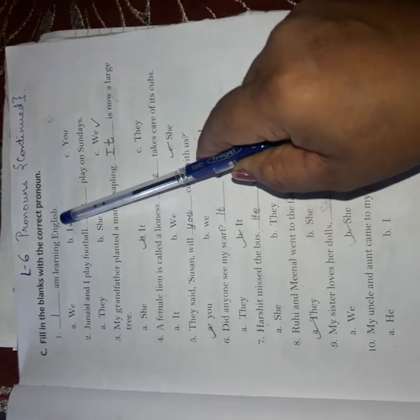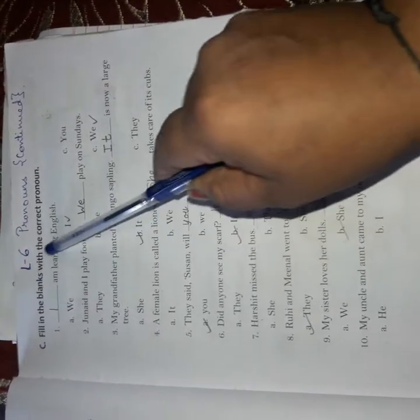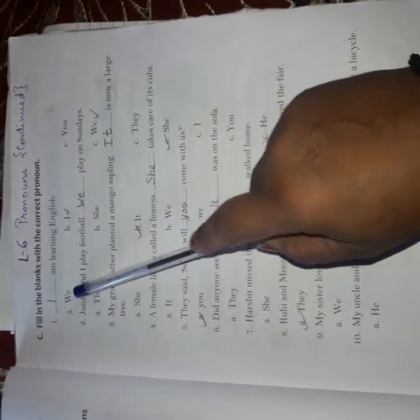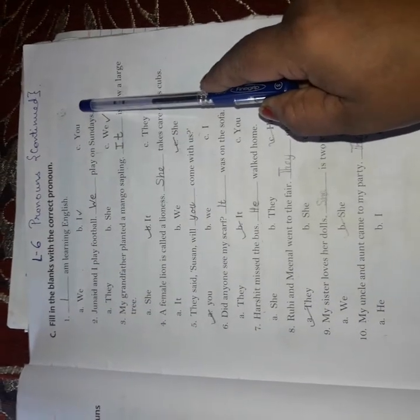First one. Dash am learning English. Now am is coming here. We are talking about ourself, myself. So we will use I. We, I, you. By choosing from here, or without choosing from here you can do it. I am learning English.